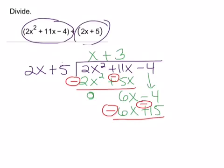So we get 6x minus 6x again is 0. And let me go back to my green pen here. Negative 4 minus 15 is negative 19. And we don't have anything else to bring down, so this must be our remainder.